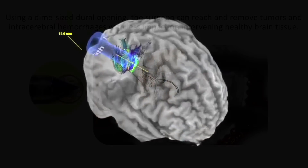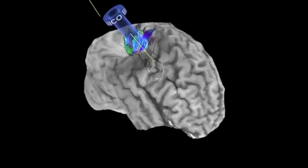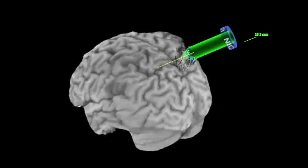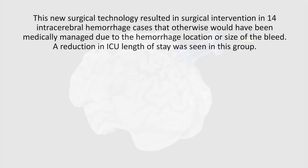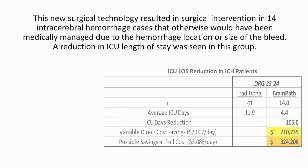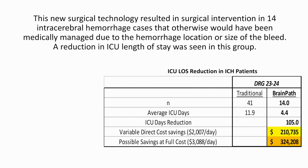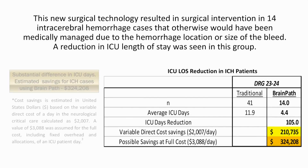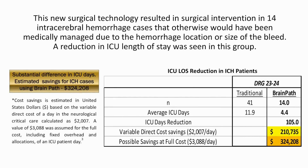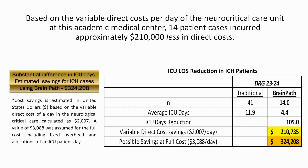The new surgical technology resulted in surgical intervention in 14 intracerebral hemorrhage cases that otherwise would have been medically managed due to the hemorrhage location or size of the bleed. A reduction in ICU length of stay was seen in this group. Based on the variable direct cost per day in the neurocritical care unit at this academic medical center, these 14 patient cases incurred approximately $210,000 less in direct cost.